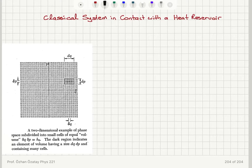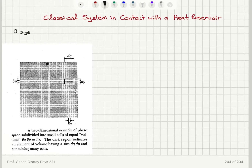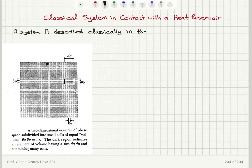We have a classical system that is in thermal contact with a heat reservoir, and we would like to know the probability of finding the system in a state r of energy E sub r. So system A, which is described classically, is what we are considering. It is in thermal equilibrium with a heat reservoir.